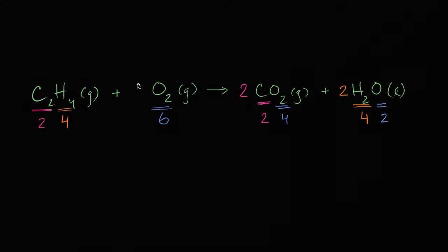So how do I do that? Well I just need three of these molecules. If I have three molecules, each of them have two oxygens, I'm going to have a total of six oxygens. And just like that, we have balanced this combustion reaction, this chemical equation.